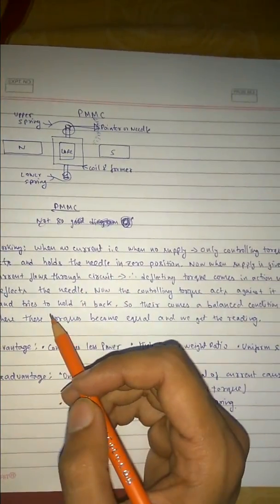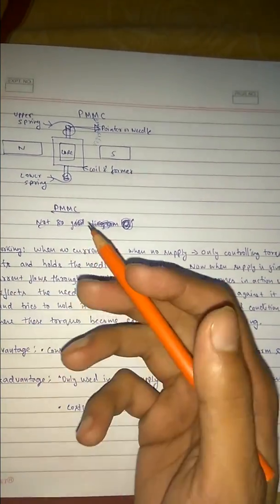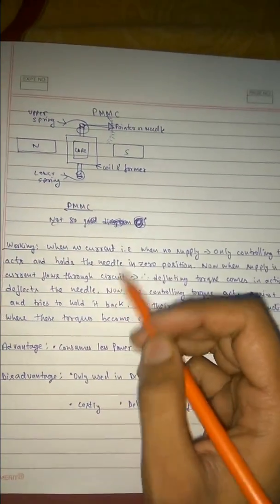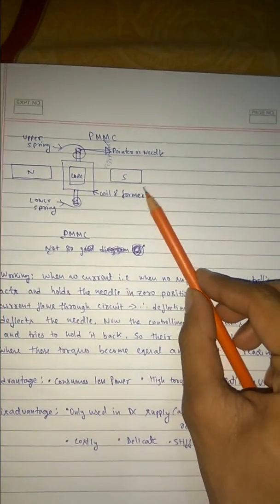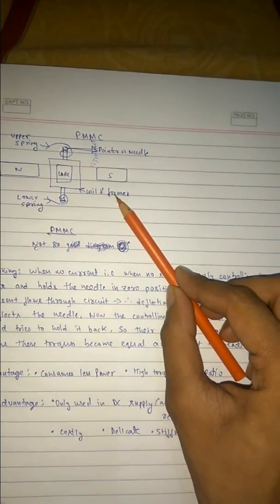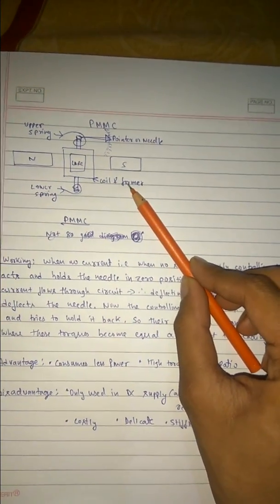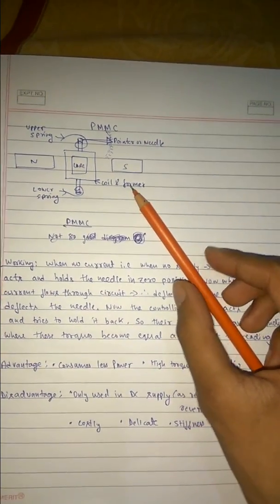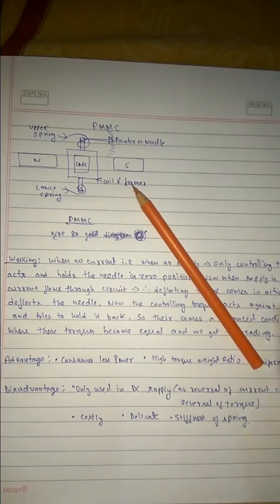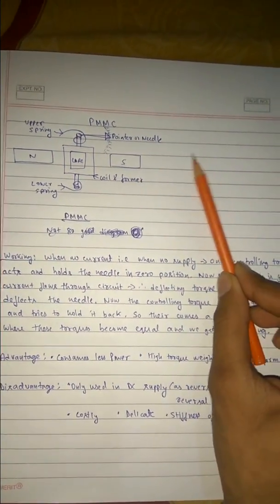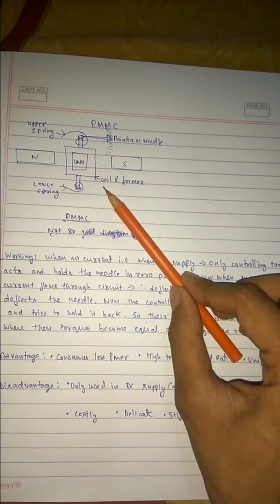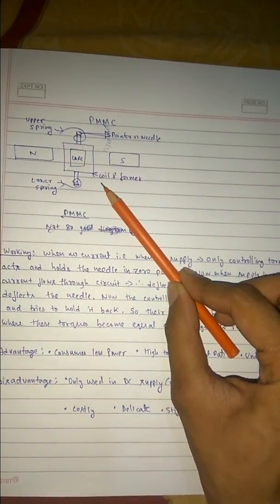When there is no supply, no current flows through the circuit. This is our pointer — it is fixed at the zero position. The controlling torque acts on it. What is this controlling torque doing? It is holding back the needle to the zero position.